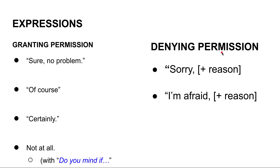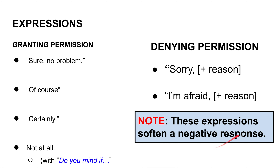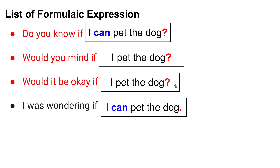Other expressions for granting permission include: 'sure,' 'no problem,' 'of course,' 'certainly,' and 'not at all' (used with 'do you mind'). For denying permission, use 'sorry' or 'I'm afraid' to soften negative responses. There are also other formulaic expressions: 'would you mind if I pet the dog?', 'would it be okay if I pet the dog?', or 'I was wondering if I can pet the dog.'